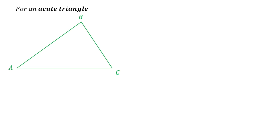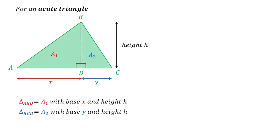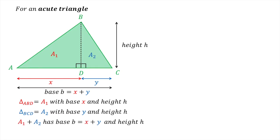We will now consider an acute triangle ABC. To see why the formula for a right triangle also applies to an acute triangle, we will split the acute triangle into two right triangles: triangle ABD and triangle BCD. Note that both these triangles have the same height h, but triangle ABD has area A1 and base x, and triangle BCD has area A2 and base y. The lengths x and y sum to the base b of the original triangle ABC, so the area A1 plus A2 has base b and height h.